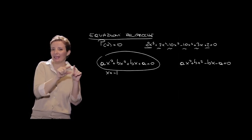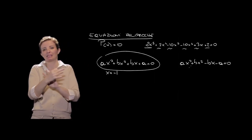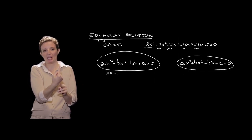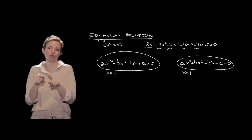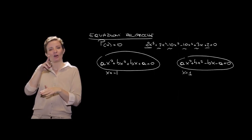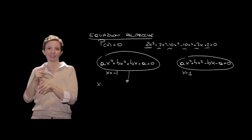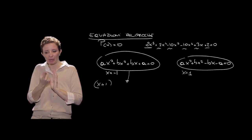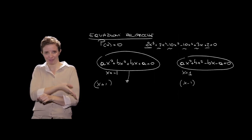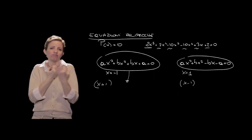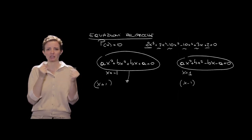Basta sostituire x = −1 nell'equazione per verificare che il polinomio si annulla. Analogamente, per il tipo ax³ + bx² − bx − a = 0, x = 1 è radice. Questo significa che, usando la regola di Ruffini, possiamo abbassare queste equazioni reciproche dal terzo al secondo grado — divisibili rispettivamente per (x+1) e (x−1) — e applicare le normali tecniche di soluzione del secondo grado.